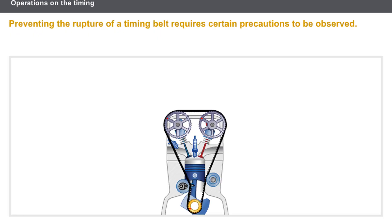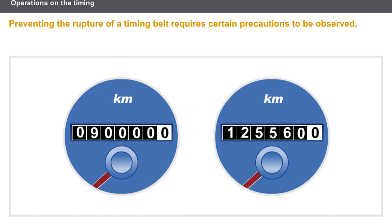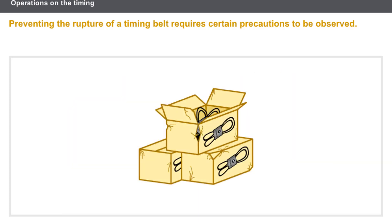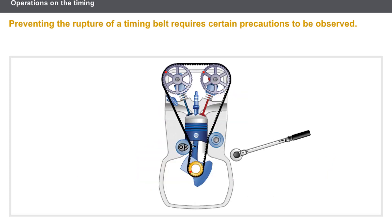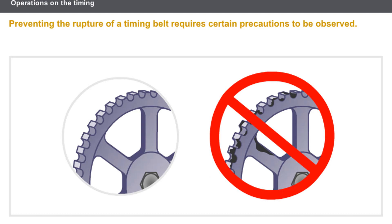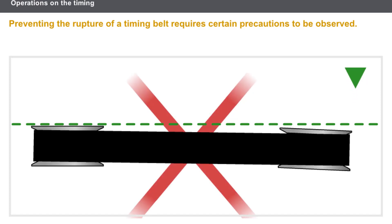Rupture or damage to a timing belt can be caused by the following: belt staining caused by an oil leakage, failure to comply with the replacement interval, damage to the belt during storage or when fitting, failure to comply with the correct tightening torques and the parts to be replaced, failure to comply with the information relating to cleanliness during the fitting process, and incorrect alignment of the pulleys.